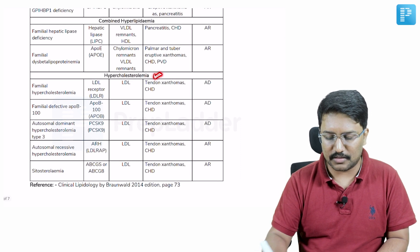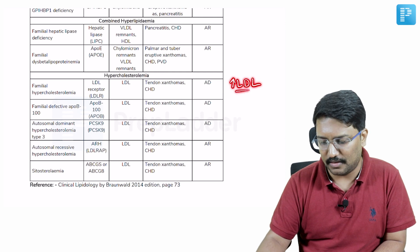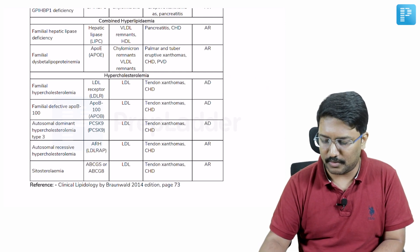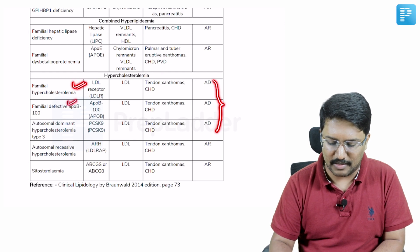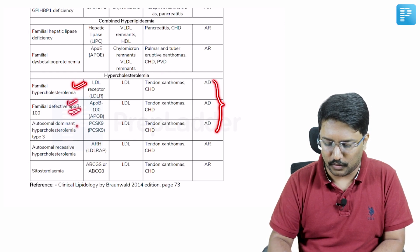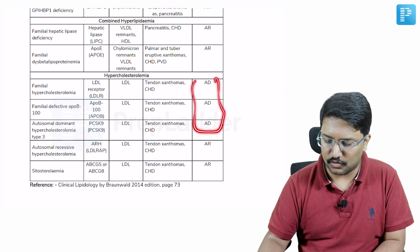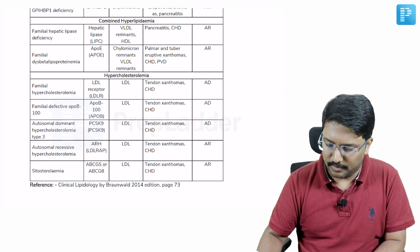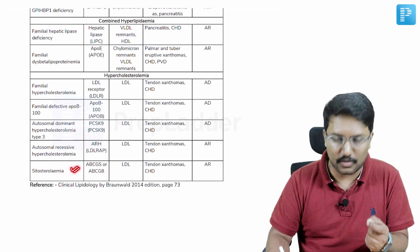Coming to the conditions which can be grouped under hypercholesterolemia, in those cases you basically have LDL which is elevated. And you look from the table, you notice that the first three: familial hypercholesterolemia, familial defective ApoB-100, and autosomal dominant hypercholesterolemia type 3, these are the three which are autosomal dominant.